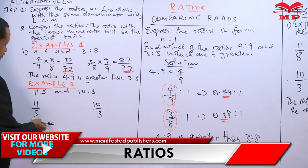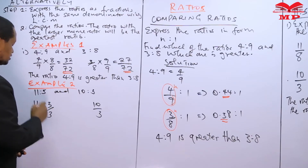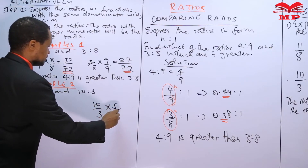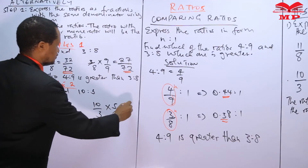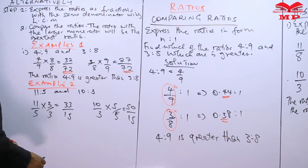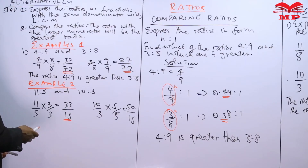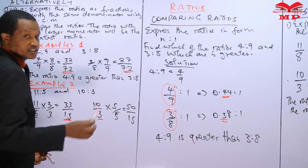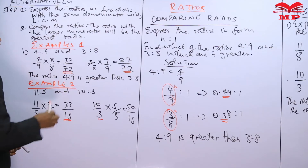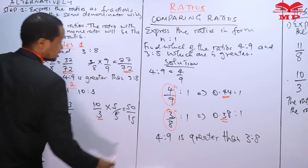The denominators are five and three. We multiply eleven over five by three over three, and ten over three by five over five. This gives thirty-three over fifteen and fifty over fifteen. The LCM of five and three is fifteen, so both fractions now have the same denominator.